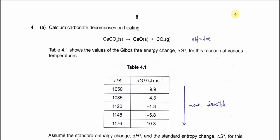Question 4a. Calcium carbonate decomposes on heating. This is the equation. From here you should know that it is an endothermic reaction because decomposition requires energy. Energy needs to be supplied in order to decompose the compound, so therefore delta H must be positive.